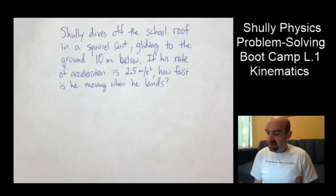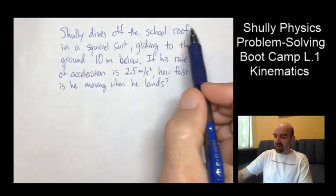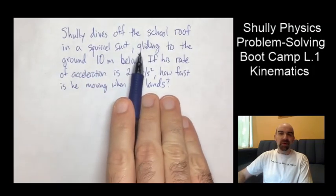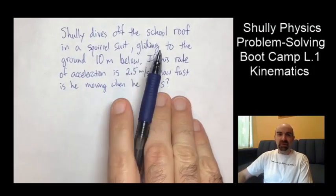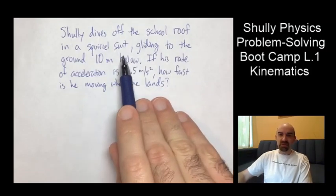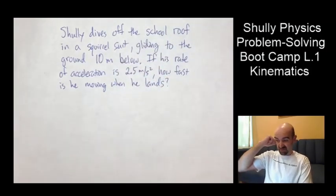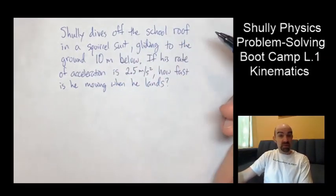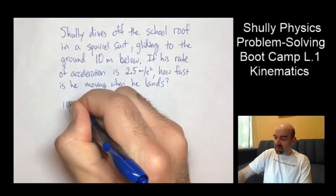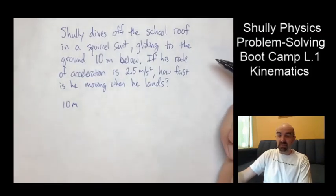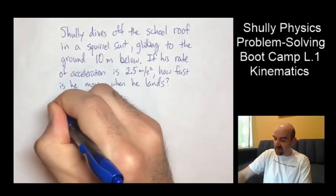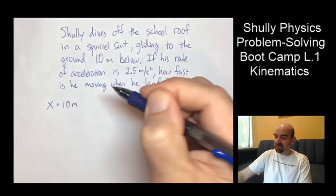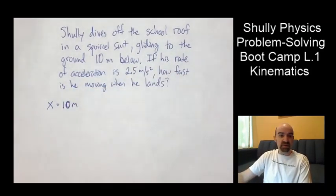So what's given? Well, great thing to look for is numbers. Squirrel suit. Here, by the way, diving to the ground in a squirrel suit is not a good idea. Shully is not going to make it here, I don't think. Anyway, gliding to the ground 10 meters below. What is that quantity? 10 meters is a distance or a displacement. It's how far I'm falling to the ground. So I'm going to call that X. X is my final position after falling to the ground, 10 meters.